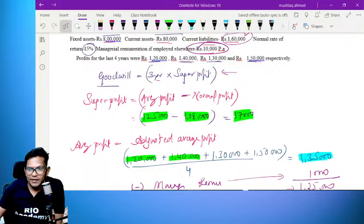So 1,25,000 minus 1,08,000 equals 17,000. Let's solve one more problem from this and then jump to the next topic, capitalization of super profit.